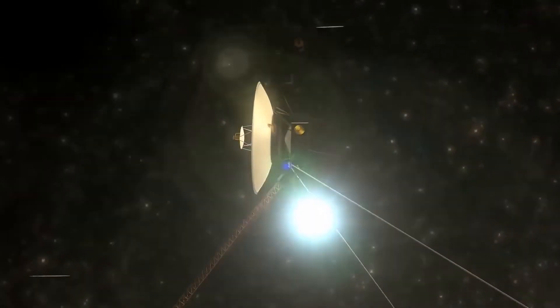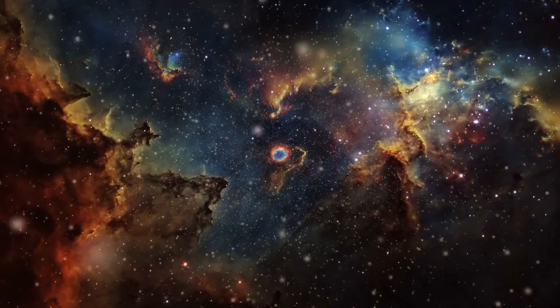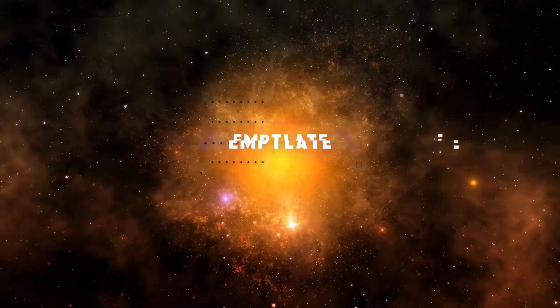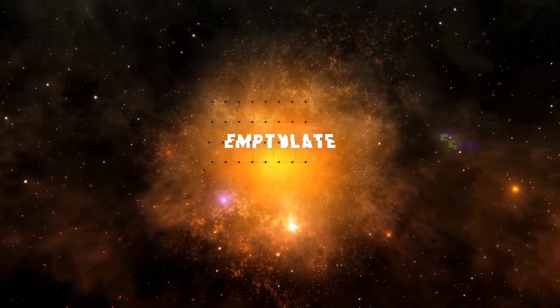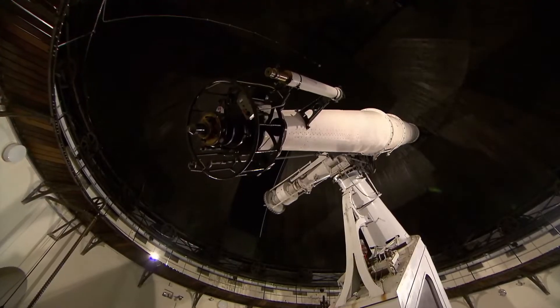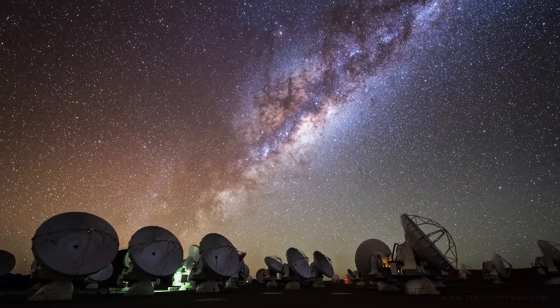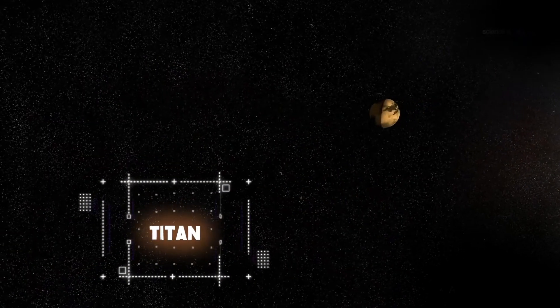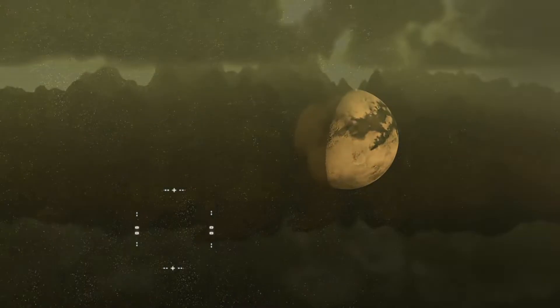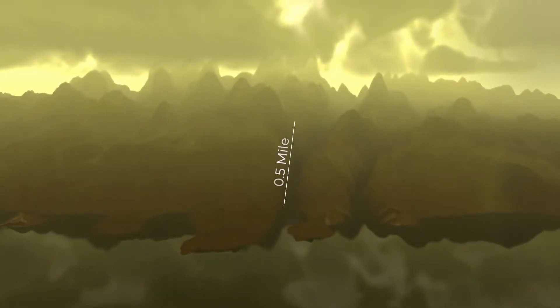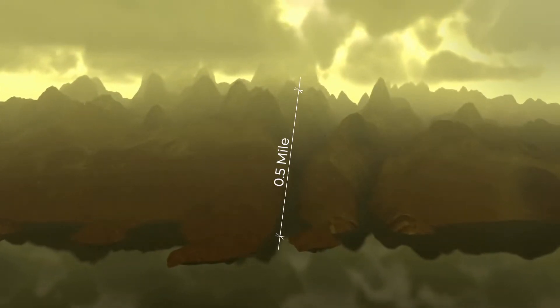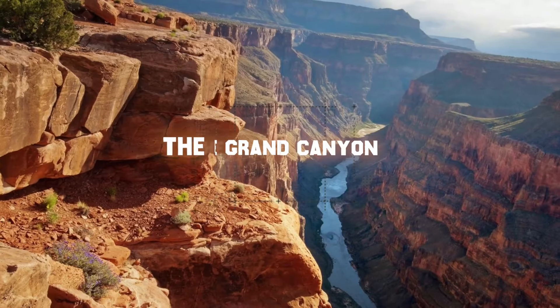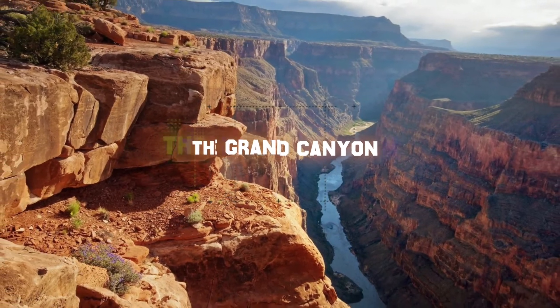When we think of space, it can often invoke thoughts of a space completely devoid of life, just an empty and desolate place. But astronomers have found that there can be unexpected things waiting to surprise us in unlikely places. Take Saturn's largest moon, Titan. Its surface is covered with massive canyons that are cut up to half a mile deep into the moon's crust. Imagine it like a massive version of the Grand Canyon.